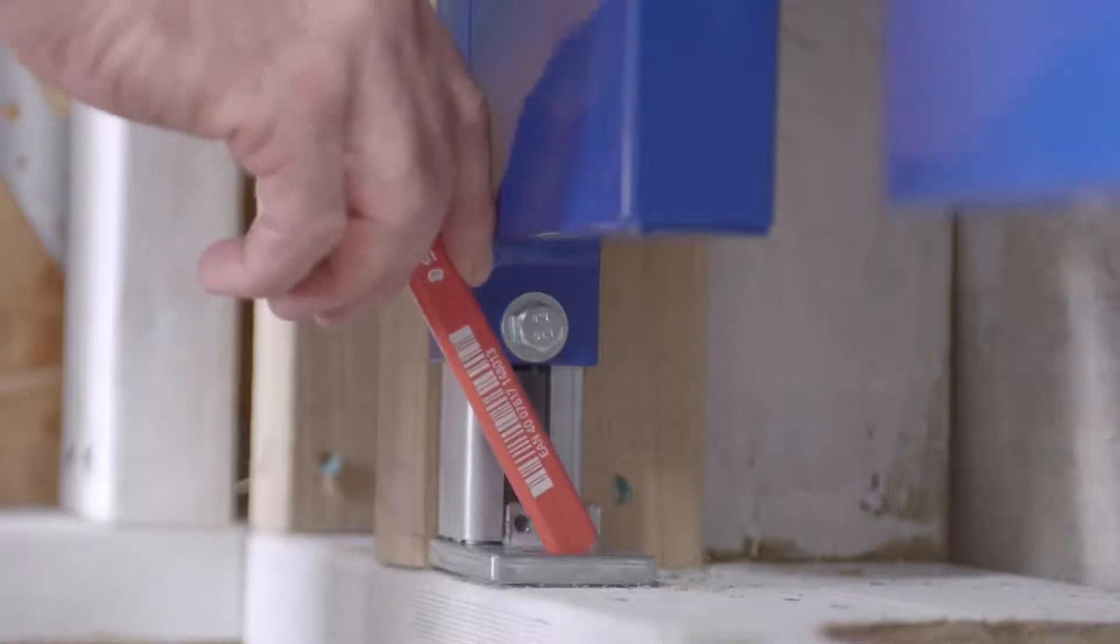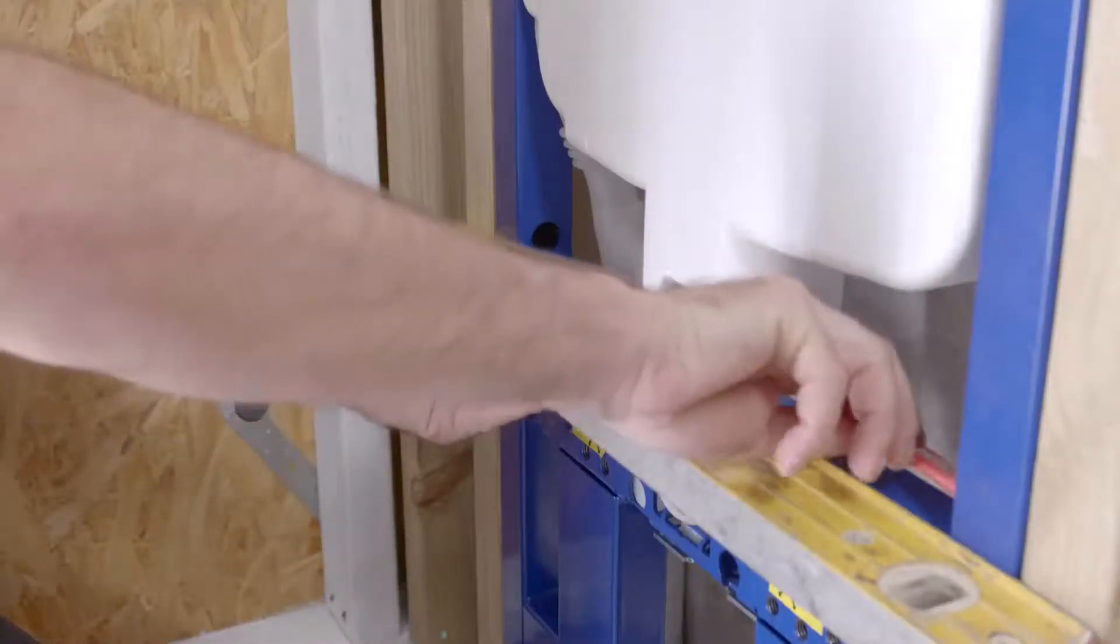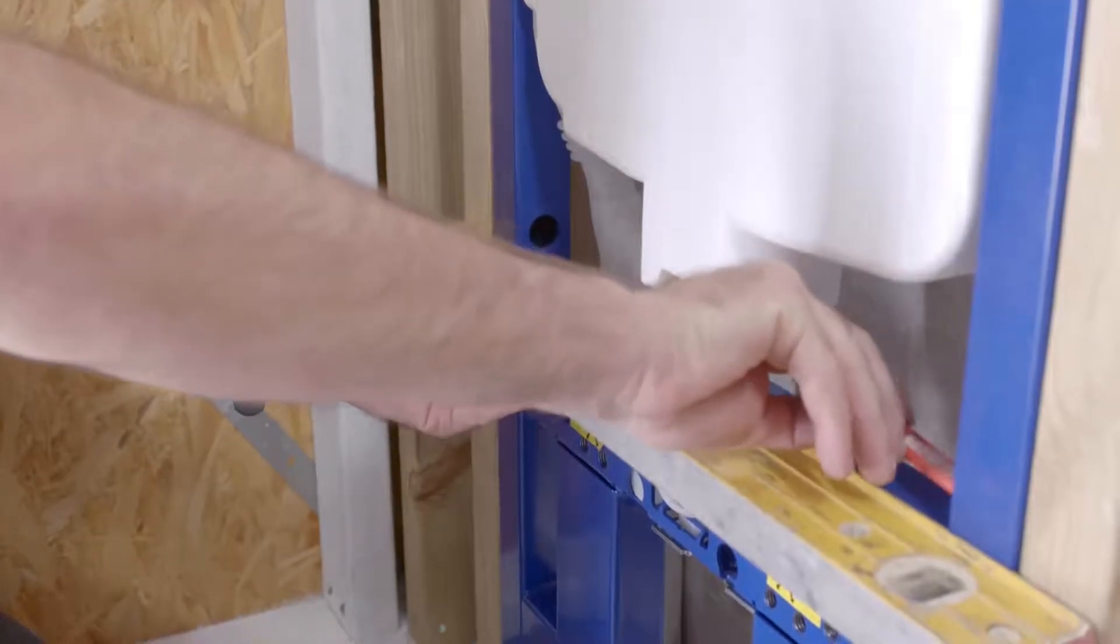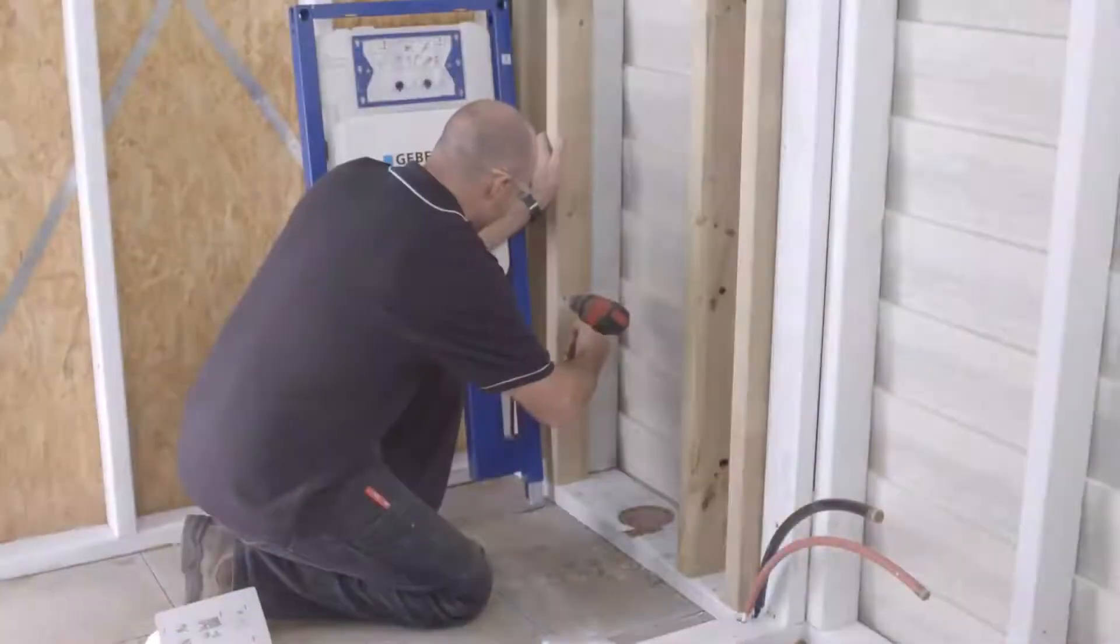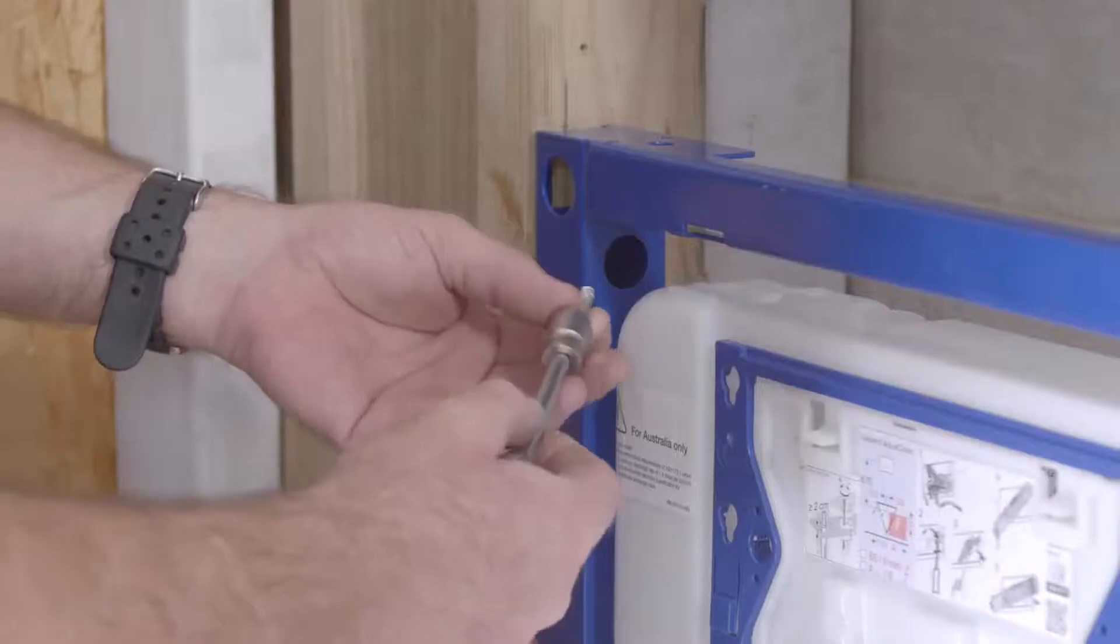Mark the fixing holes on the sides and feet of the frame. When marking holes, the frame must be flush with the studs. Then, remove the frame. Pre-drill and fix the frame in place, making sure it's level.